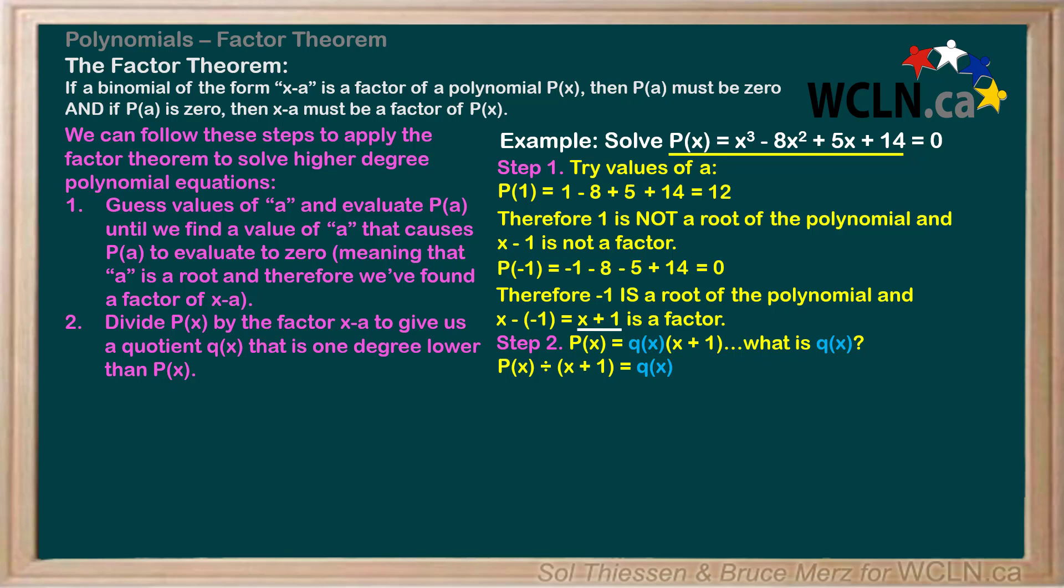Hopefully, completing the division gave you a quotient of x squared minus 9x plus 14 with a remainder of 0. Remember, since x plus 1 is a factor of P(x), the remainder from the division must be 0. You can use this as a checkpoint in the future. If you don't get a remainder of 0, then something went wrong either in step 1, where you found the factor, or in your division.